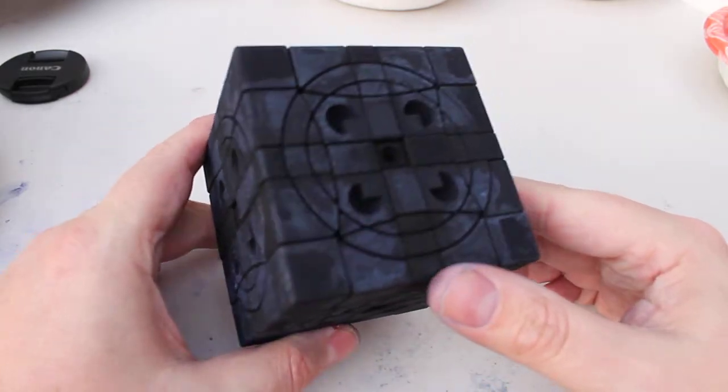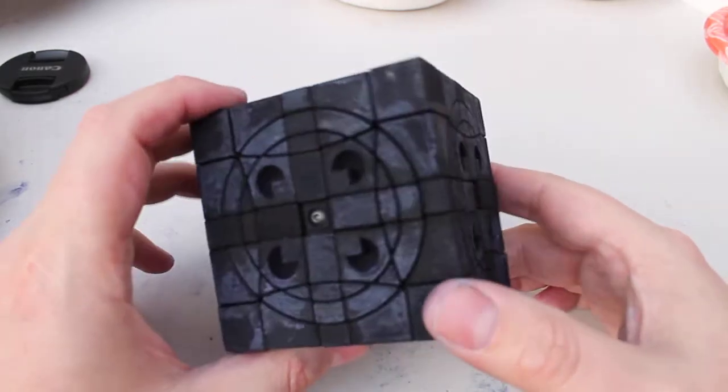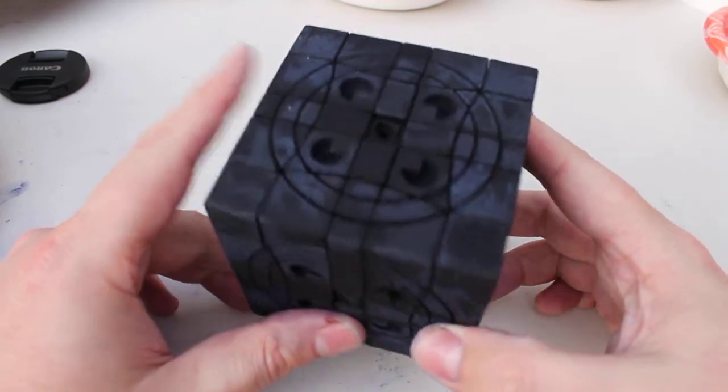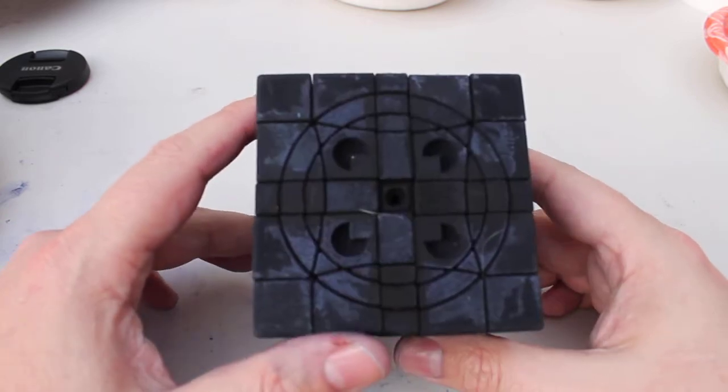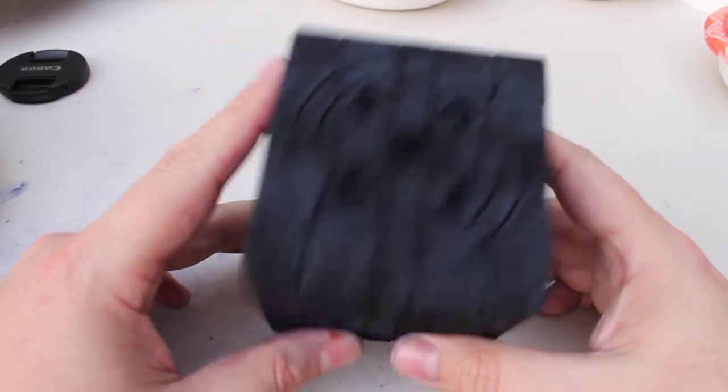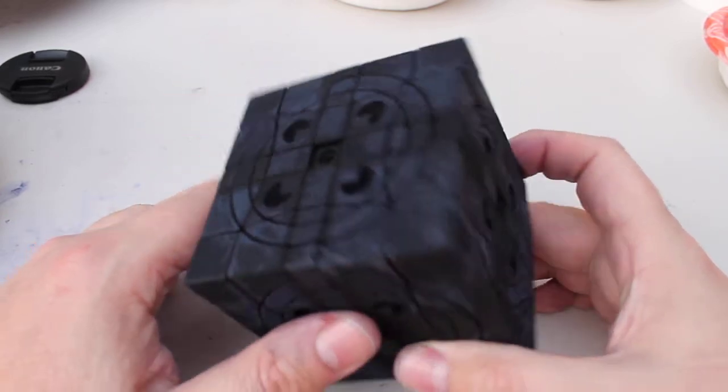So I'm curious what you guys have in the way of recommendations for removing this gunk that's left on the surface from the masking tape. I've seen others use masking tape for this purpose so I assume there's a good way to get it off but I haven't figured it out yet.